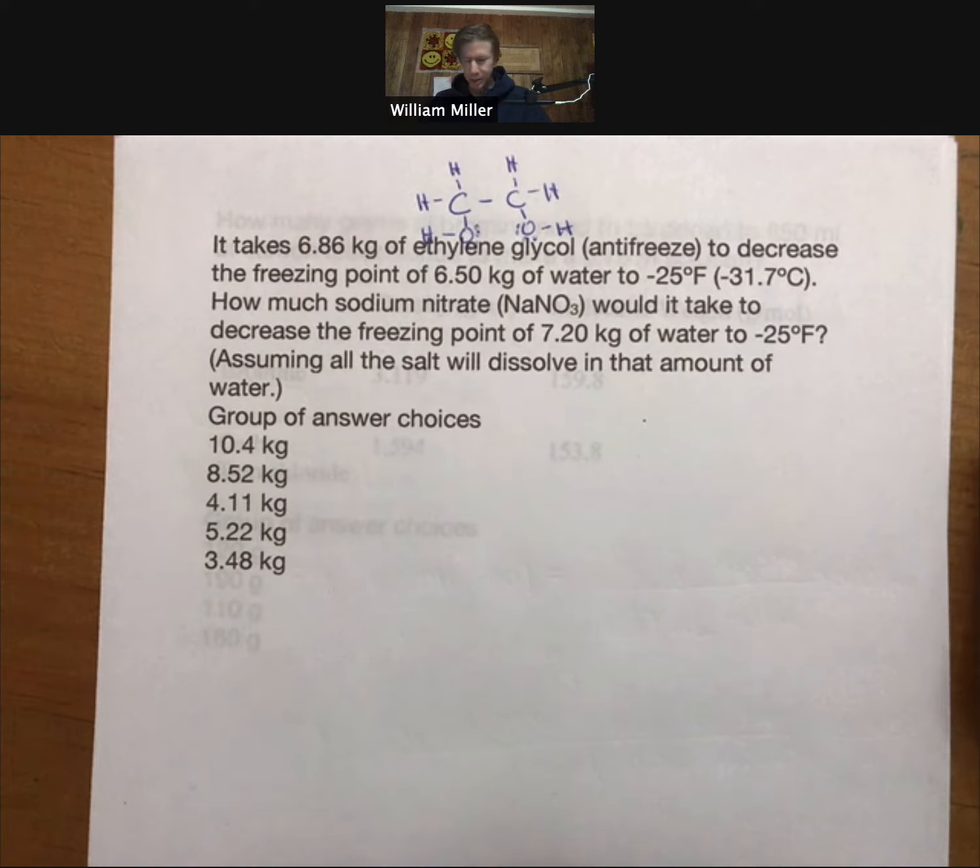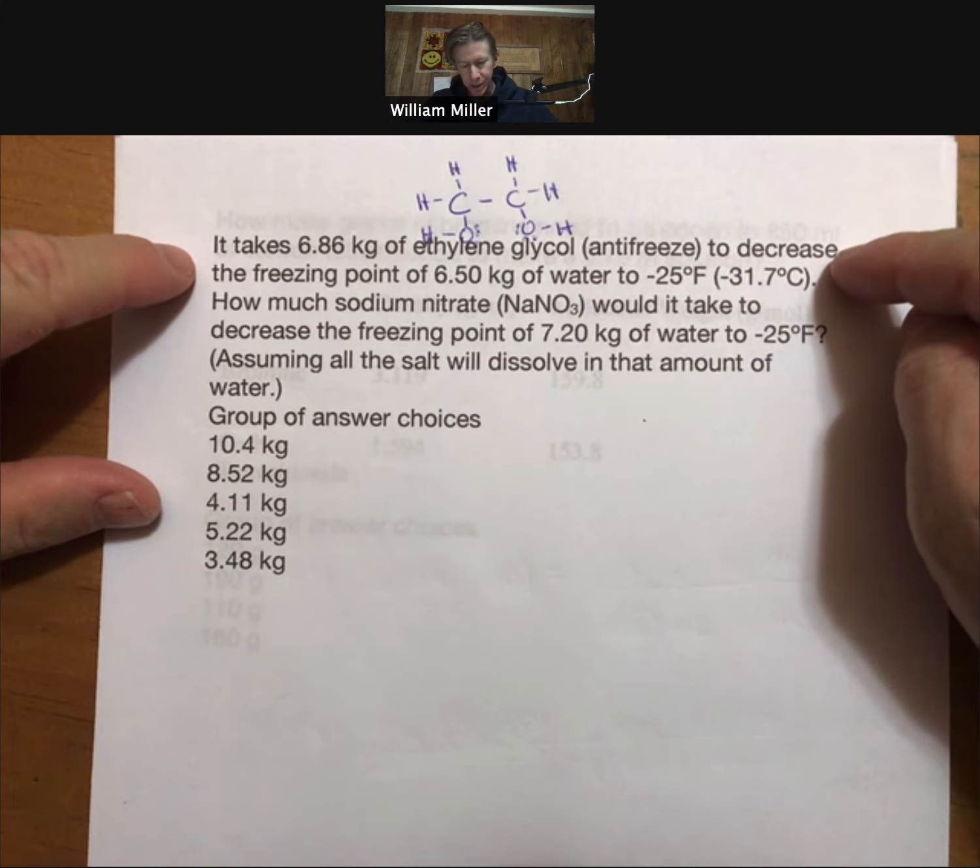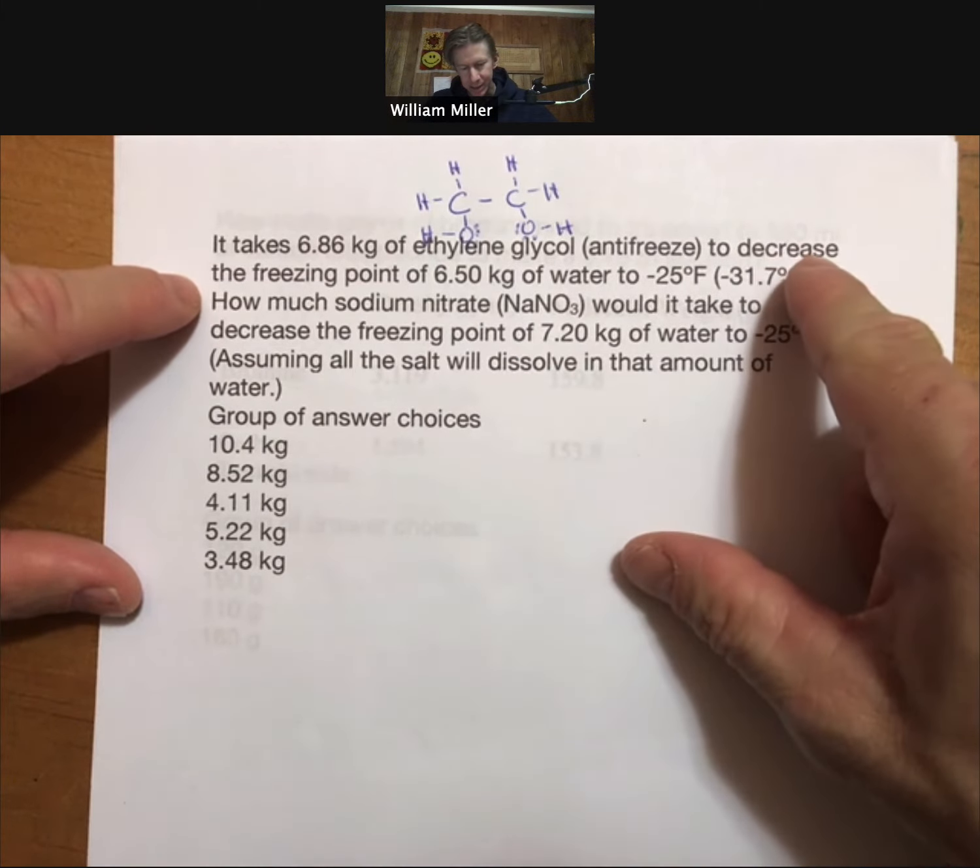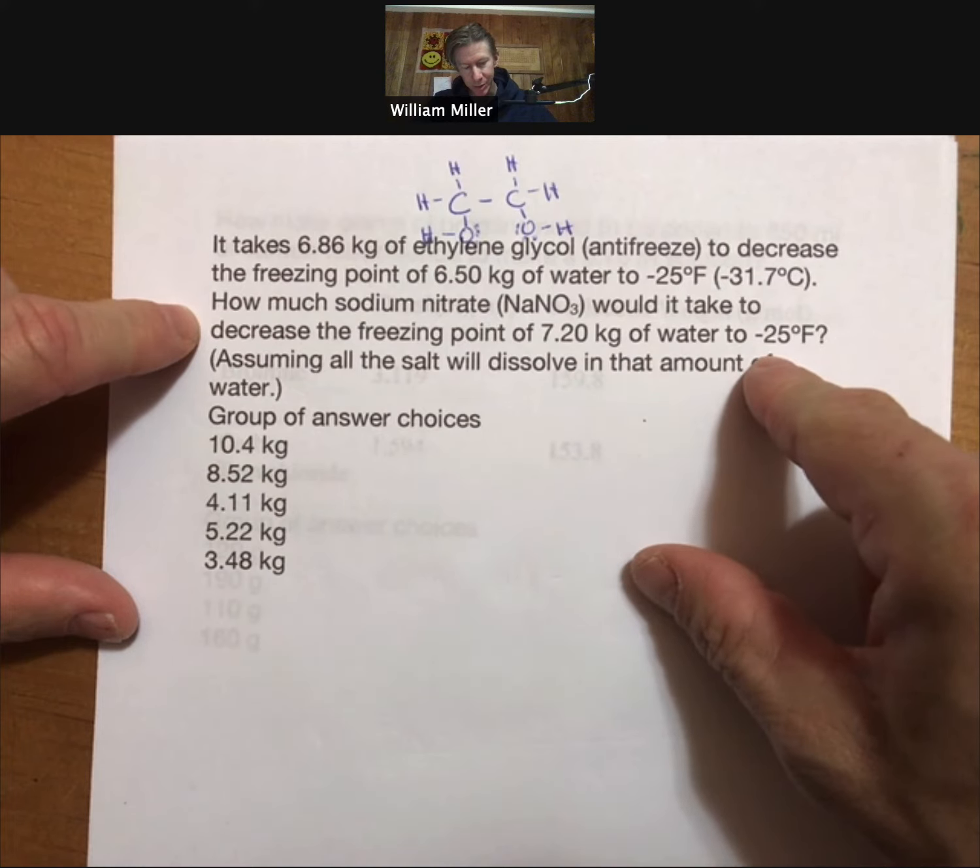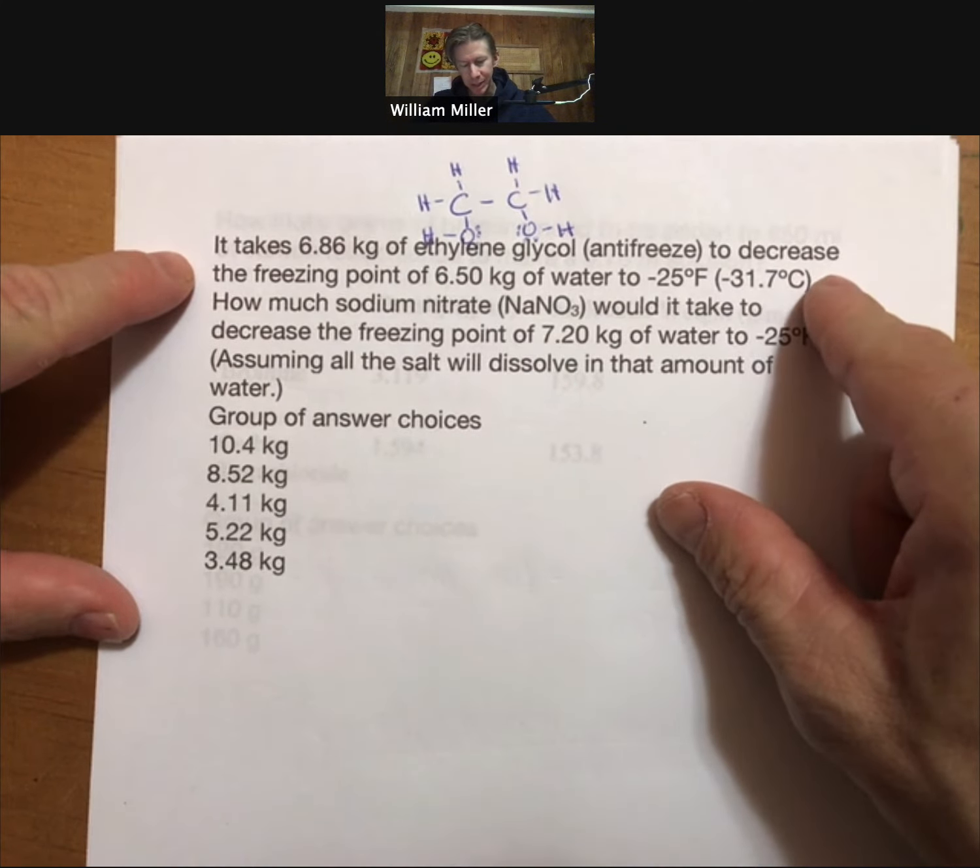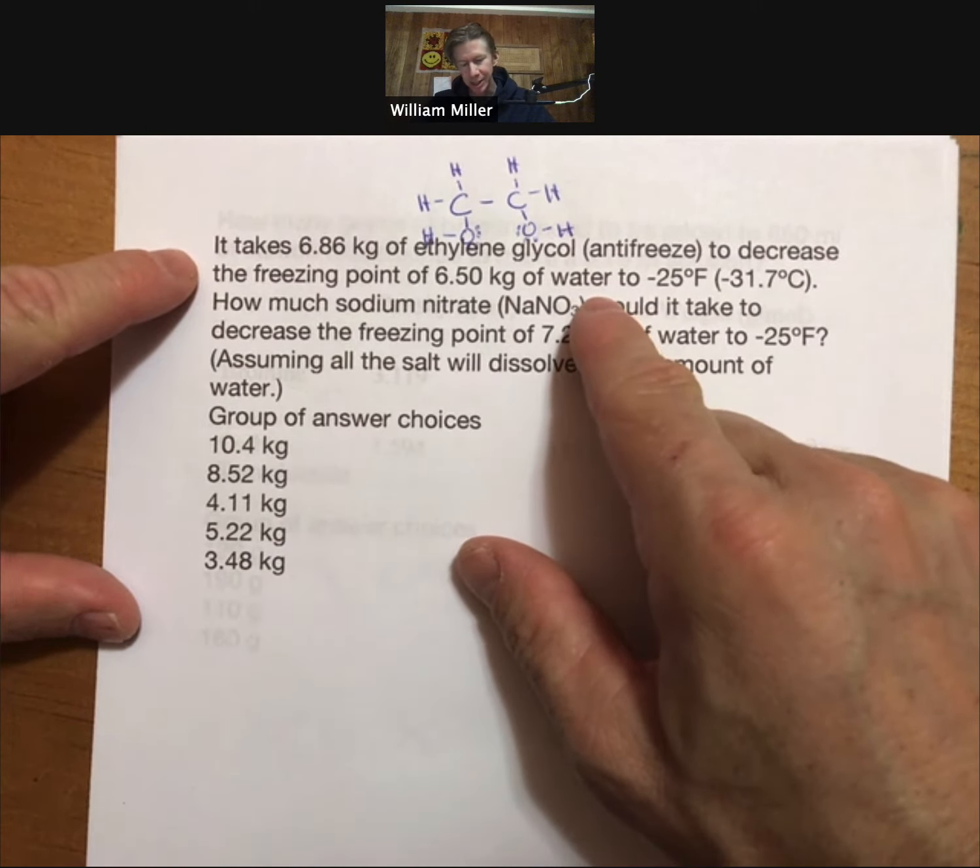Our approach to this problem is to find the amount of sodium nitrate that decreases the freezing point of 7.20 kilograms of water to minus 25 degrees Fahrenheit. We have information about ethylene glycol and how much it takes for that.